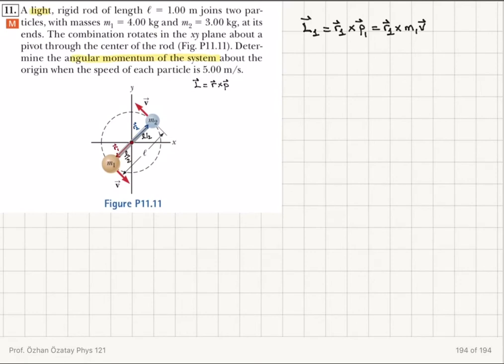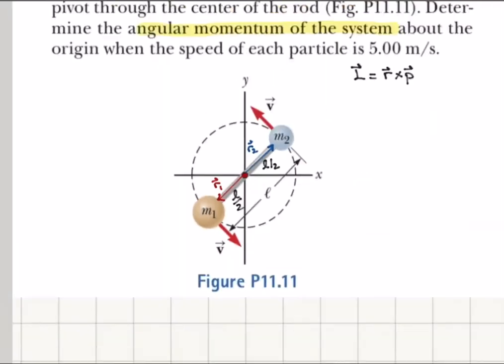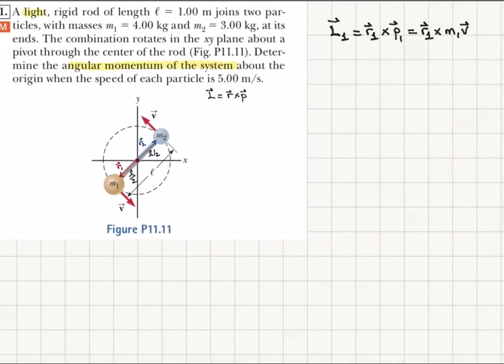For the first particle, L1 vector is r1 cross p1, which is r1 cross m1 times v. They have the same speed, five meters per second, so it's m1v as the linear momentum for this one.